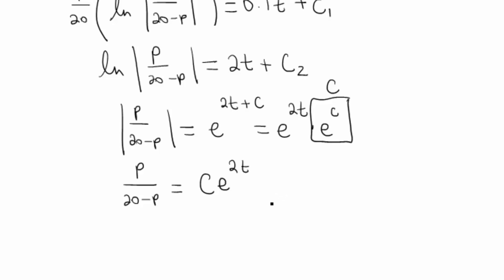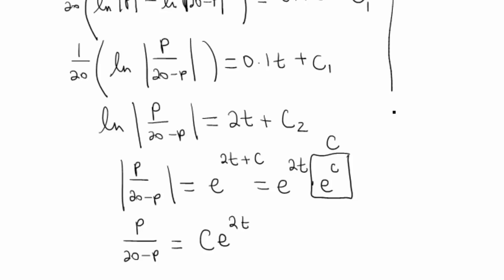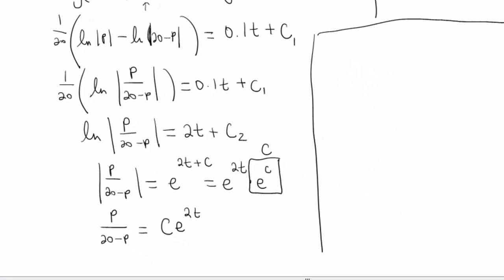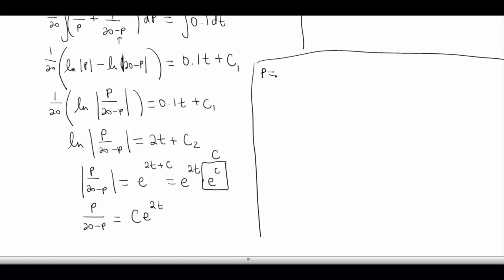Finally getting somewhere. Or are we? Remember, we're solving for p. I see a p in the numerator and the denominator. Let's go ahead and multiply both sides by this denominator. So we end up with p equals 20 minus p times c e to the 2t.